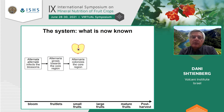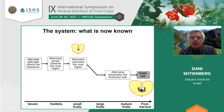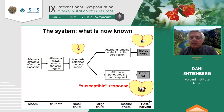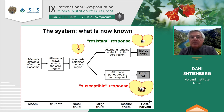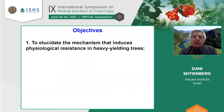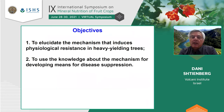So the scenario changed a little. Alternaria still penetrates and infects in the blossoms, develops and colonizes the core region in small fruitlets. Then there are two different situations: in the susceptible response, Alternaria penetrates the endocarp wall and causes core rot; in the other, it remains restricted to the core region, resulting in moldy core — which we call the resistance response. The objective of our study was to elucidate the mechanisms underlying physiological resistance in heavy-yielding trees, and then use this knowledge to develop means for disease suppression.